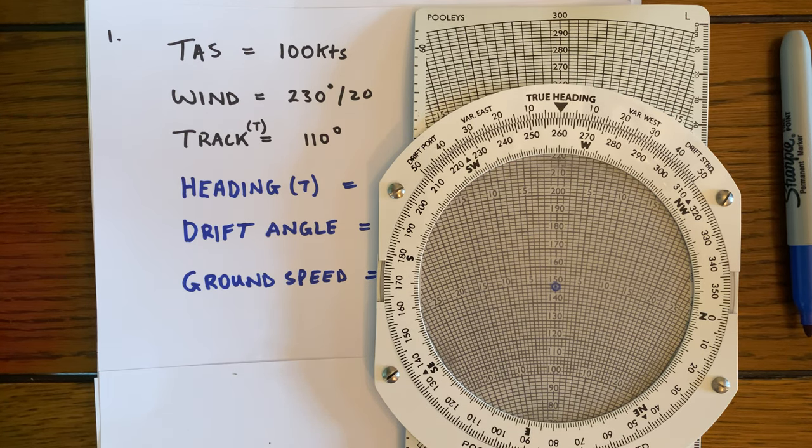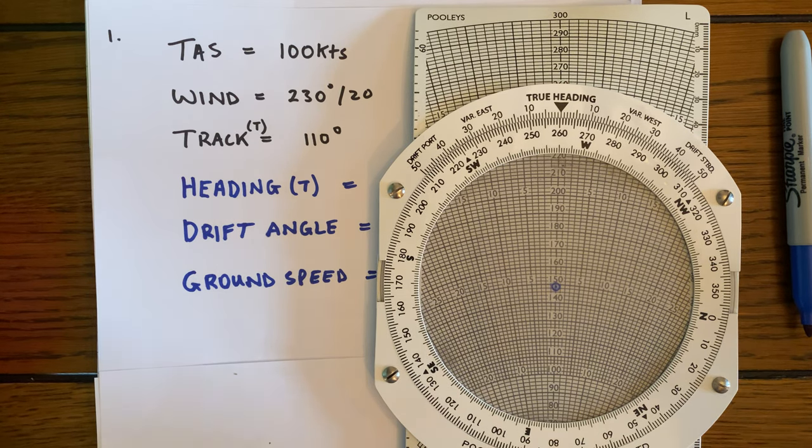Okay, so I'm just going to show a quick video here of what I think is the quickest and easiest way of calculating heading and ground speed when given a TAS, the wind, and track. This is a typical example that you would expect to see in a GNAV or flight planning exam, and it's something that you're going to be calculating for VFR flights.